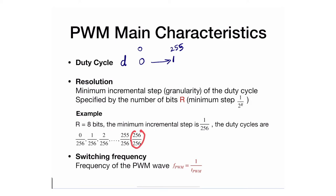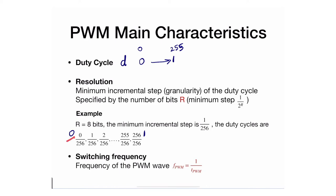256/256 is equivalent to 1, and 0/256 is 0. So what I'm saying is I need a duty cycle that goes between 0 and 1, and I can't have an infinite number of possibilities. I'm going to discretize that range between 0 and 1 based on R.